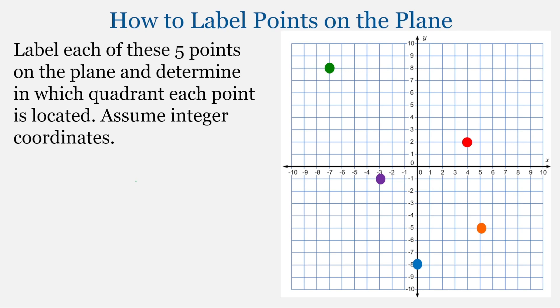So let's practice a few. Here we're going to label each of these five points on the plane and determine in which quadrant each point is located. We're also going to assume integer coordinates. Because we could have fractions, we could have decimals, but these points all have integer coordinates.